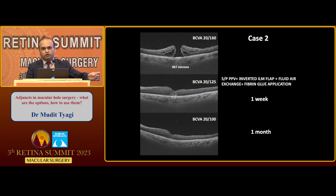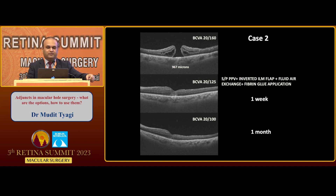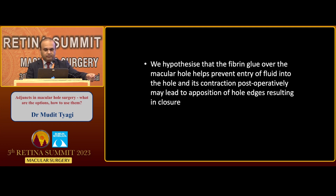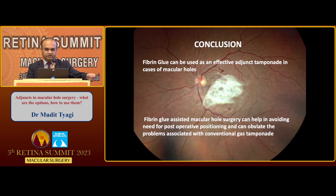Fibrin glue has been shown to be absolutely non-toxic to the retina and gets absorbed spontaneously within a span of one week. We have used this earlier in cases of retinal detachments, and now we have started exploring its role as an adjunct in macular holes — specifically in patients who are unable to maintain positioning and cannot use conventional tamponades in the form of air or gas. Gas or air acts as a scaffold over the macular hole for glial proliferation, and surface tension extrudes subretinal fluid around the hole. We believe fibrin glue over the hole also prevents fluid entry, and its contraction post-operatively may lead to apposition of hole edges resulting in closure, apart from acting as a scaffold for glial proliferation. In conclusion, it is an effective adjunct tamponade, and we are still exploring its role — it can help in avoiding the need for post-op positioning and avoid problems associated with conventional gas tamponade.